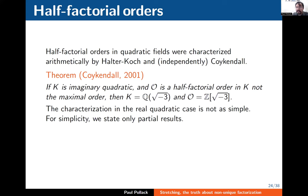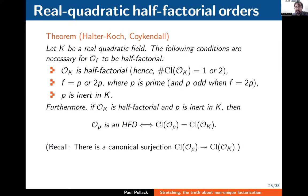The full classification is a bit complicated, but let me say something about it. The imaginary case is very easy with a simple beautiful answer: if you're interested in non-maximal orders in imaginary quadratic fields, there's only one that's a half-factorial domain — Z[√-3], which is the order of conductor 2 in Q(√-3). So there's precisely one non-maximal quadratic half-factorial domain in the imaginary case. The characterization in the real quadratic case is not as simple.